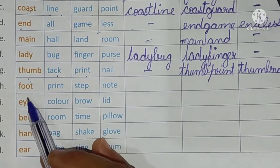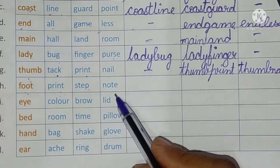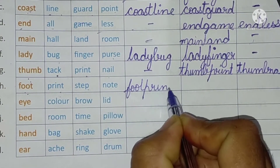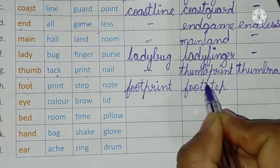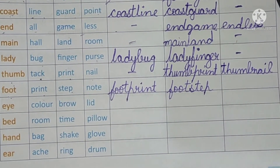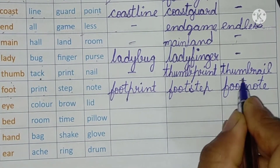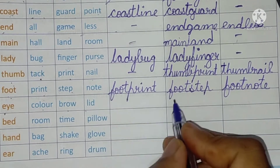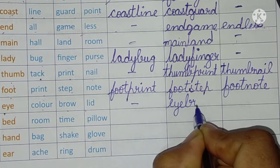Next word is 'foot': footprint, footstep, or footnote. Yes — footprint, footstep, and footnote are all valid compound words. Next is 'eye': eye color, eyebrow, or eyelid. Eye color — no. Eyebrow — yes. Eyelid — yes.